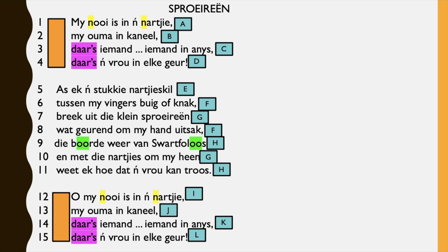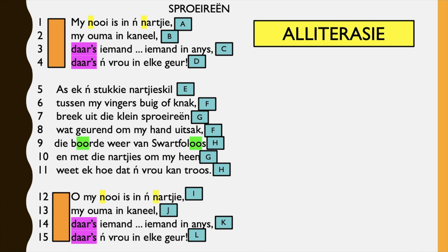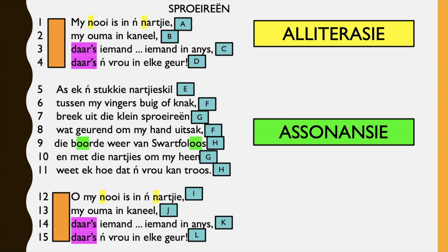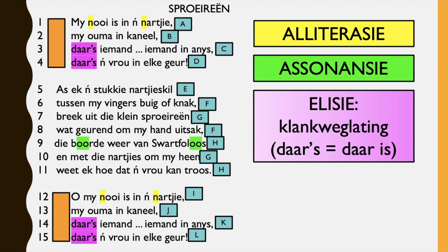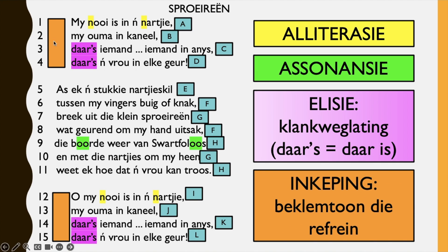So this is the poem and it's important to always hear the poem to see if you yourself can identify alliteration and assonance. In this case I did indicate it. The alliterasi is in yellow — it's a repetition of consonants. Assunansi is a repetition of vowel sounds — emphasis on sounds, it has to sound similar. And then elisie is klankweglating — so instead of saying 'dor es' you'd say 'daas' in the poem, and it just helps with the flow of the poem. And then in kiapping, as you can see there's an indentation, a space before the line starts. Therefore it's an indentation — it's emphasizing the chorus, beklemtoon die refrein.